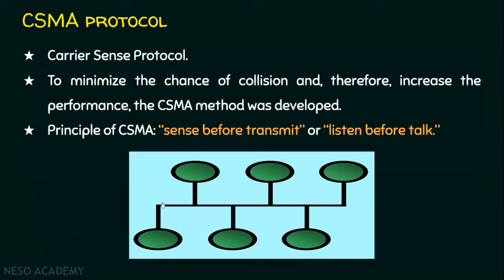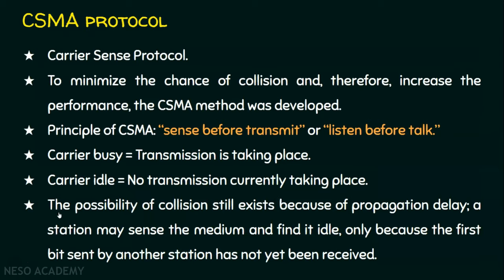For example, assume one node has placed its frame and this frame is on the way. Another node senses the channel and finds it free — because the data hasn't reached that location yet. So that station immediately places its frame, and the two frames collide with each other. The longer the distance between sender and receiver, the higher the propagation delay. A station may sense the medium and find it idle only because the first bit sent by another station has not yet been received.